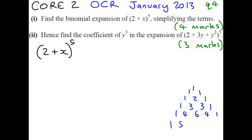And by the time we get to the row with a 5, this one is the row we're interested in. So our coefficients are going to be 1, 5, 10, 10, 5, 1.